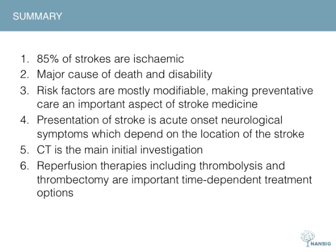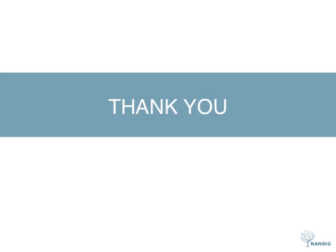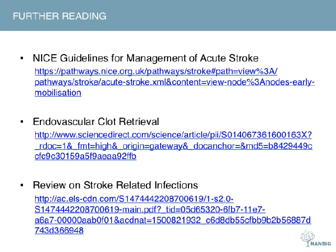To summarise: strokes can be either ischemic or hemorrhagic, with ischemic strokes making up 85% of cases. Despite a fall in incidence and mortality over the last decade, stroke remains a major cause of death and disability. Most risk factors are modifiable, making preventative medicine important, although some genetic risk factors have been identified. Strokes present with acute onset anatomically localising symptoms; the main investigation is cranial CT performed as soon as possible. Management is multidisciplinary and involves reperfusion therapies — time-dependent options to limit damage to the penumbra. Thank you for watching.